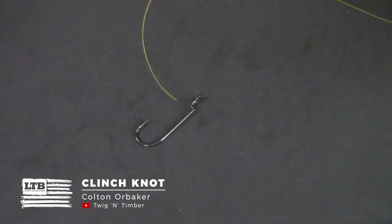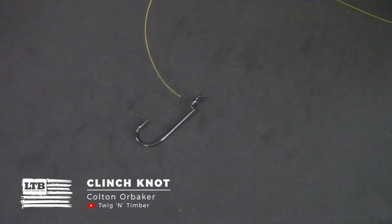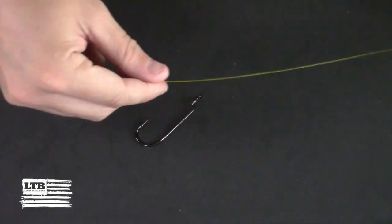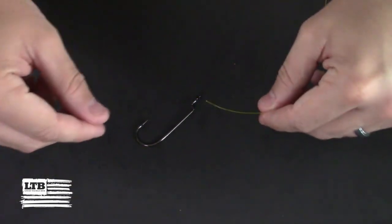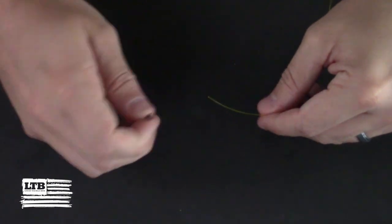It's typically used with monofilament and is used for baits that don't require any additional action due to the knot. This is great for drop shotting, jigging, or any other suitable style of fishing.